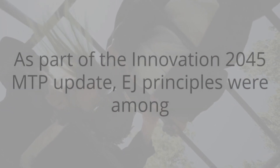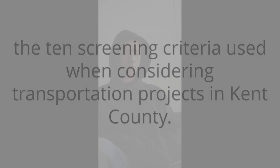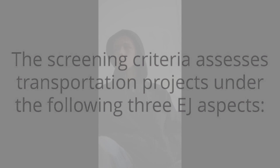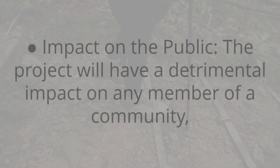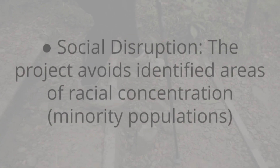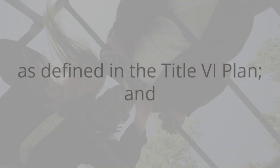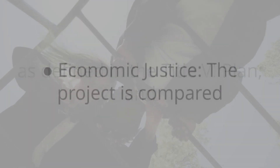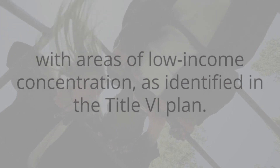As part of the Innovation 2045 MTP update, EJ principles were among the 10 screening criteria used when considering transportation projects in Kent County. The screening criteria assess transportation projects under three EJ aspects: Impact on the public — whether the project will have a detrimental impact on any community member, such as caused by a major road construction or reconstruction project; Social disruption — whether the project avoids identified areas of racial concentration and minority populations as defined in the Title VI Plan; and Economic justice — comparing the project with areas of low-income concentration as identified in the Title VI Plan.